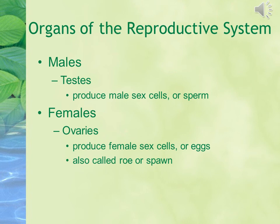The organs of the reproductive system: the male reproductive system includes the testes, while the female reproductive system includes the ovaries. The testes produce male sex cells or sperm, while the ovaries produce female sex cells or eggs, also called roe or spawn.